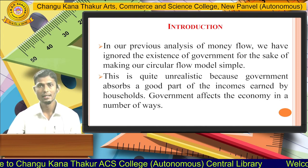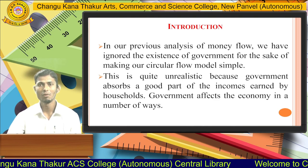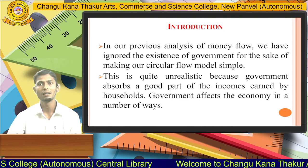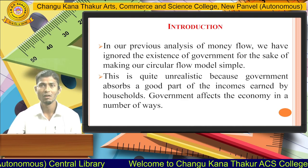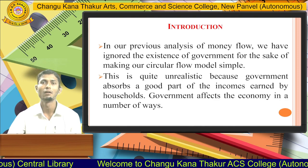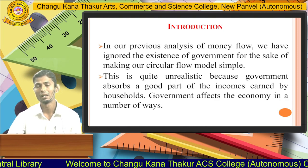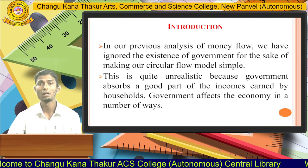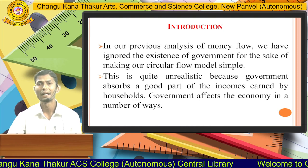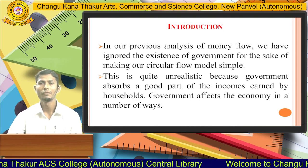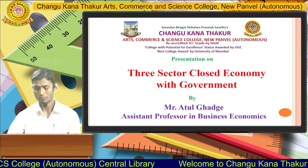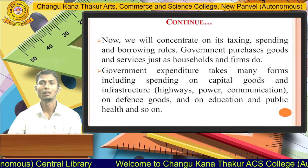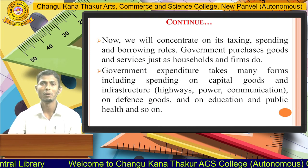Now we will discuss the three-sector model with the presence of a government. In our previous analysis of money flow we ignored the existence of government to keep our circular model simple. But this is quite unrealistic because government absorbs a good part of income earned by households. Government affects the economy in a number of ways, and we will concentrate on its taxing, spending, and borrowing roles.